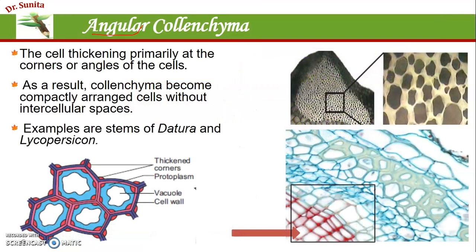Angular colenchyma — as the name suggests, the pectin substance deposition occurs at the angles of the cell wall. The colenchyma cells are compactly arranged without any intercellular spaces. This type of thickening is seen in the stem of Datura or Lycopersicon. In the microscopic diagram, the thickening is not uniform throughout the wall — it is thin in between, but at the jointing angles, thickening is present.